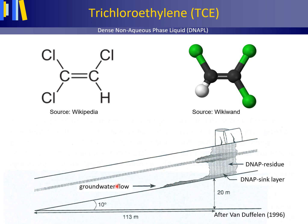Thus, a DNAPL does not necessarily flow with the groundwater flow. In lawsuits with respect to who is responsible for polluting the subsoil with TCE or another DNAPL, this should be taken into account. What should a drinking water authority do when in a field of pumping wells TCE is found in the pumped water from one of the wells?